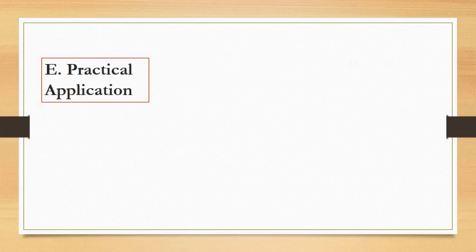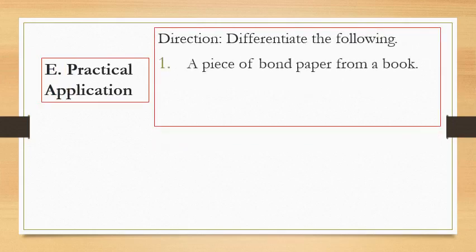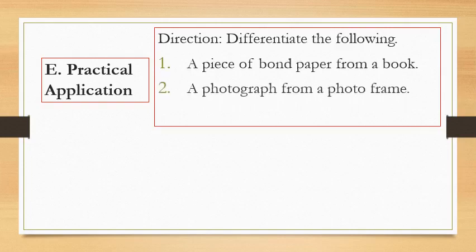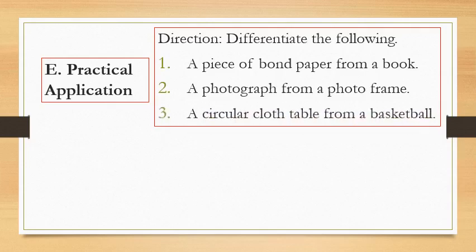Next is practical application. This time, the students or the pupils are going to differentiate the following. For number one, a piece of band paper from a book. So, they're going to differentiate a piece of band paper from a book. Also, they are going to differentiate a photograph from a photo frame. And also, they are going to differentiate a circular cloth table from a ball or a basketball.